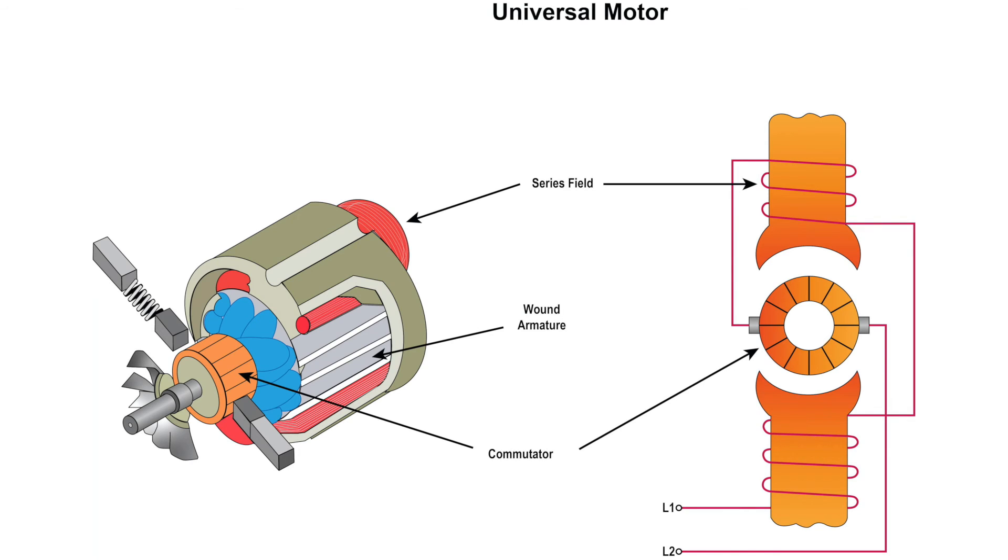These motors run at lower speeds on AC supply than they run on DC supply of the same voltage due to the reactance voltage drop, which is present in AC and not DC.